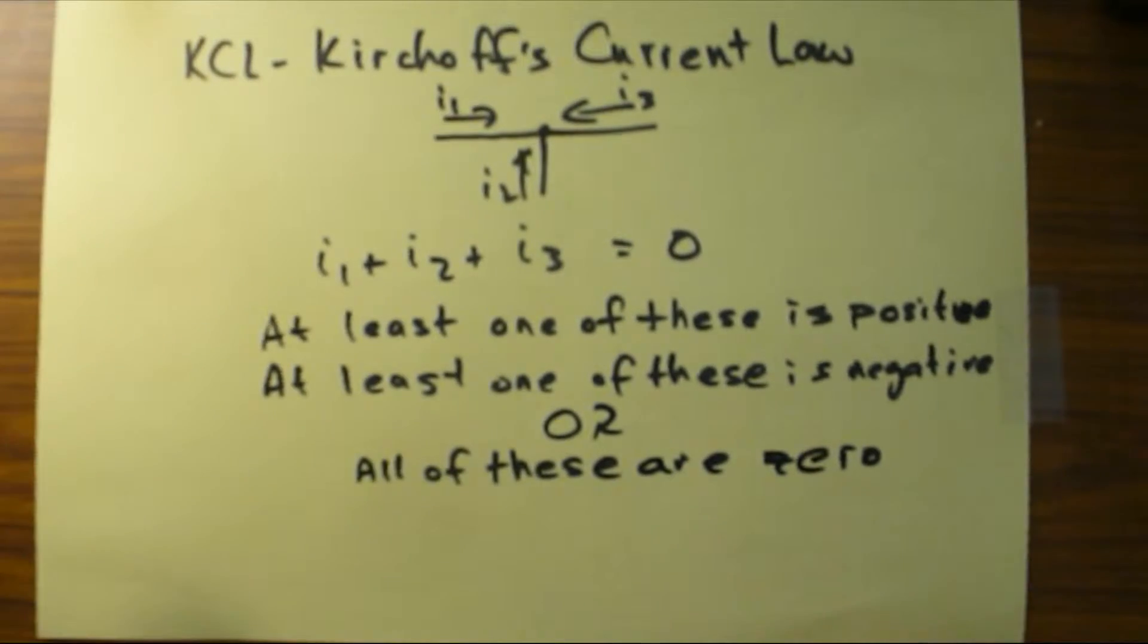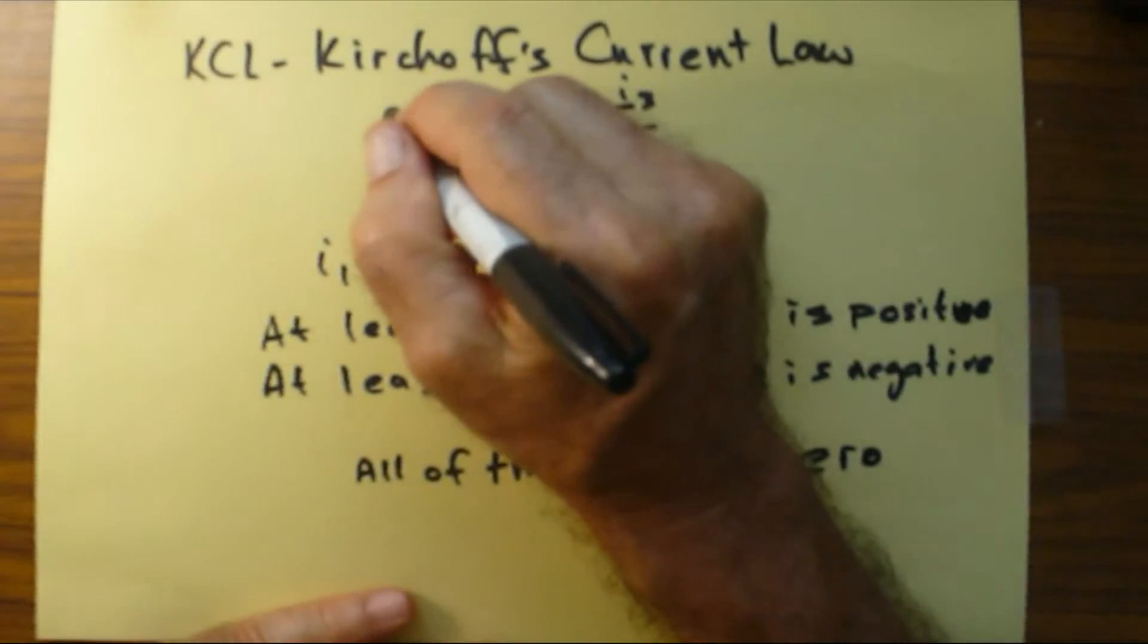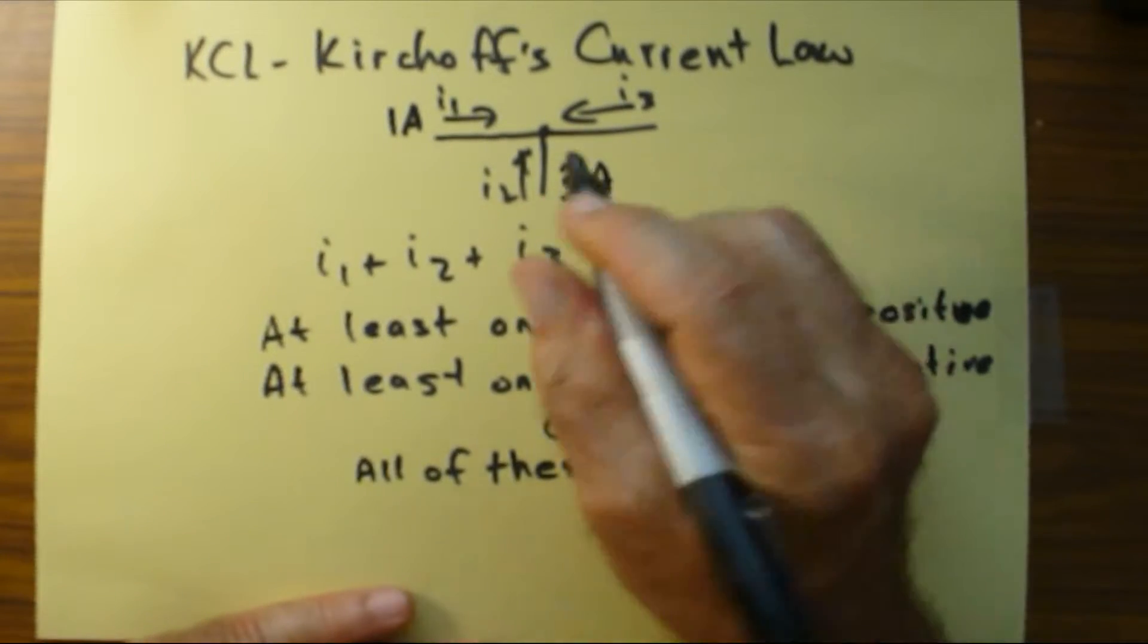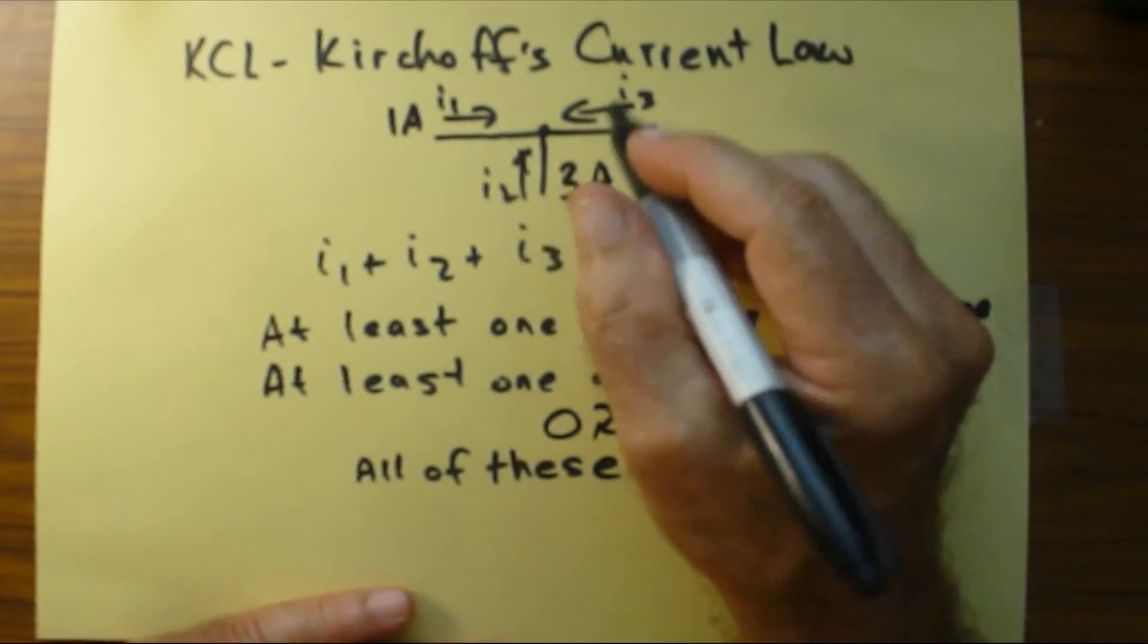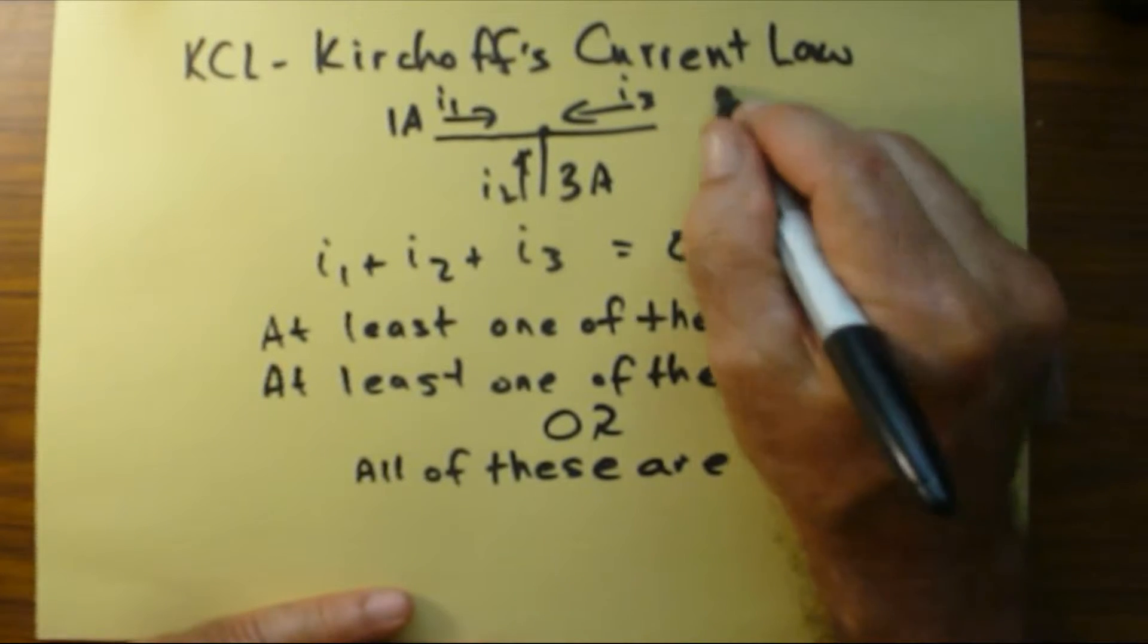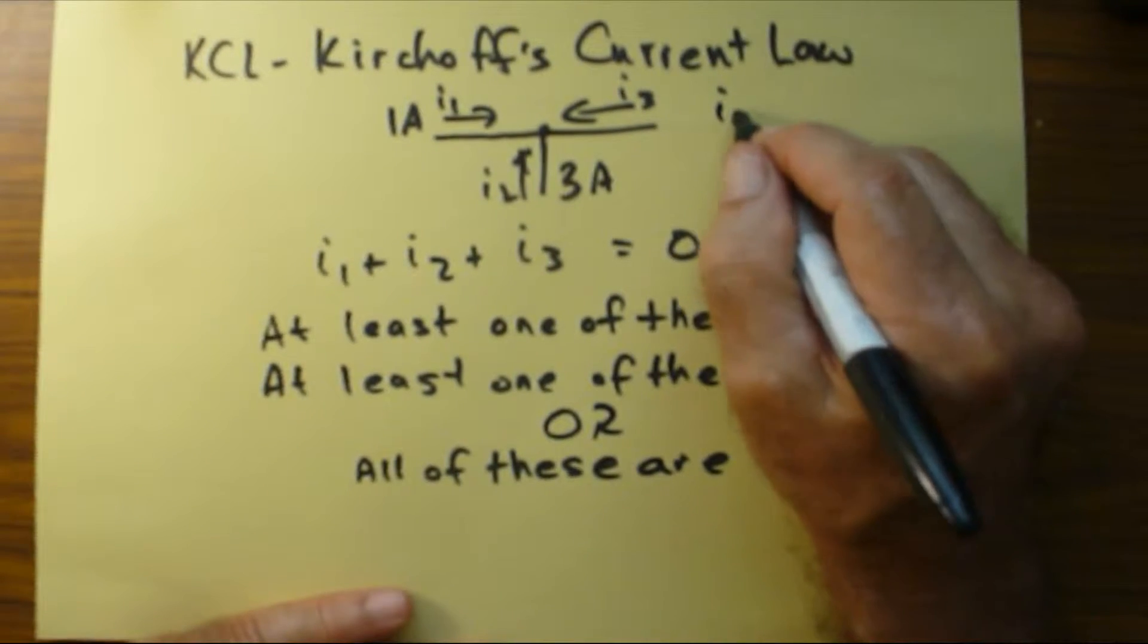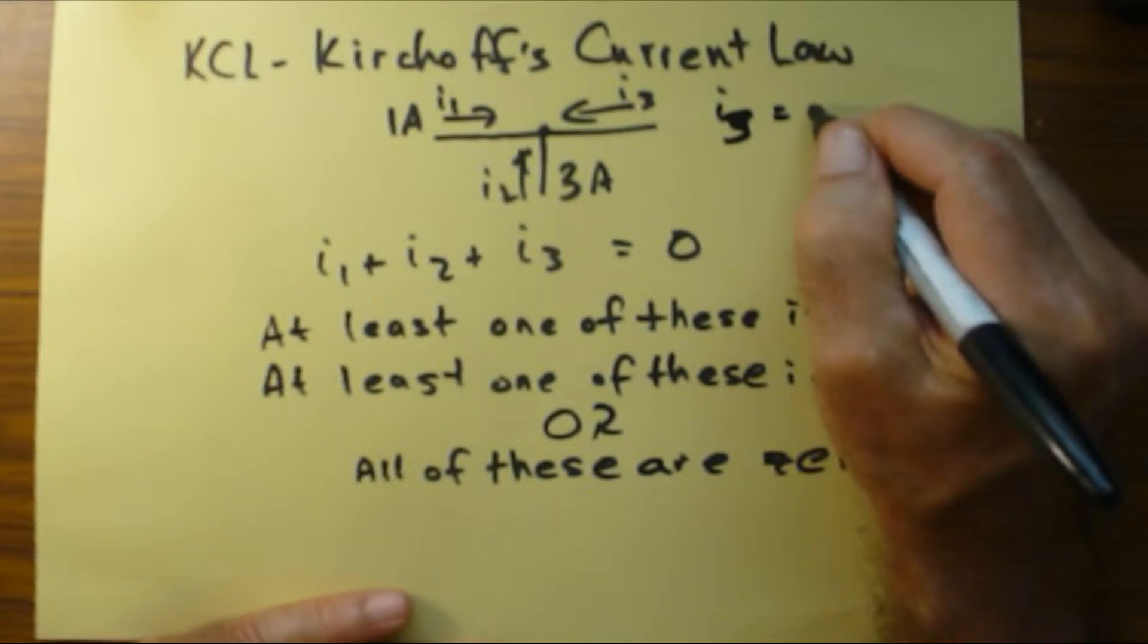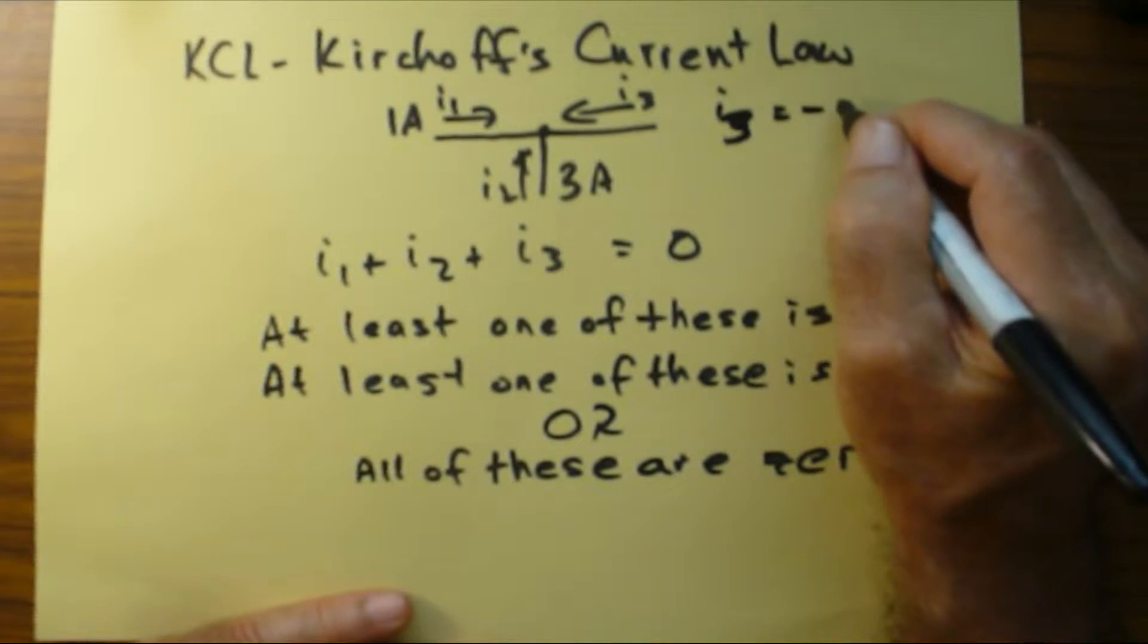So if you have one amp going in here and you have three amps going in at I2, then I3 has to be four amps going out. I3 has to be negative four.